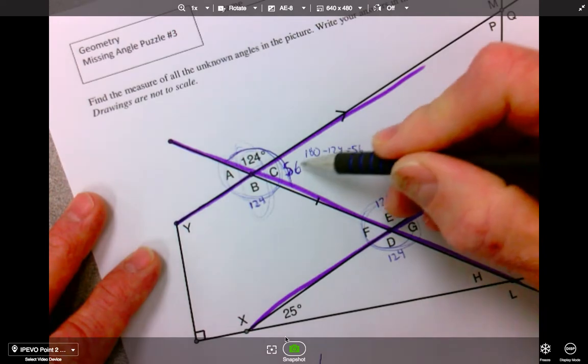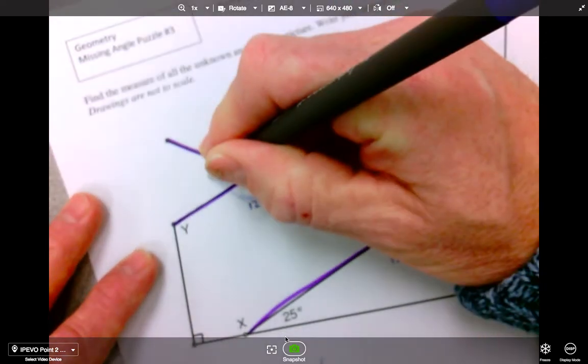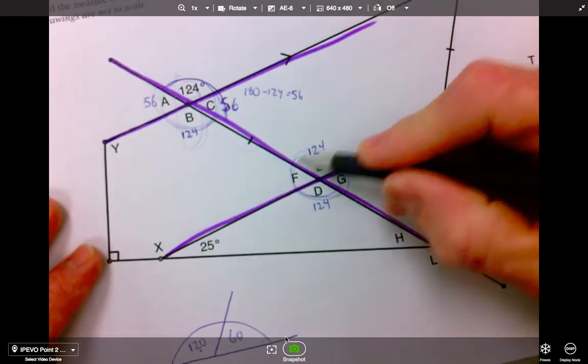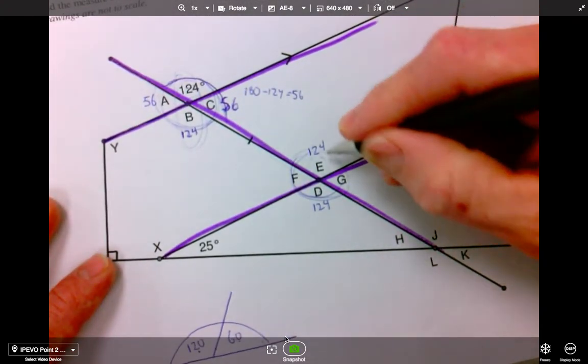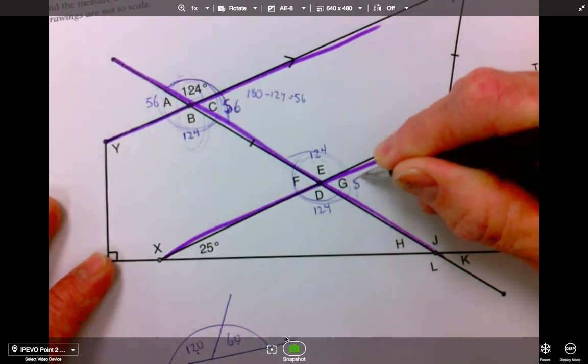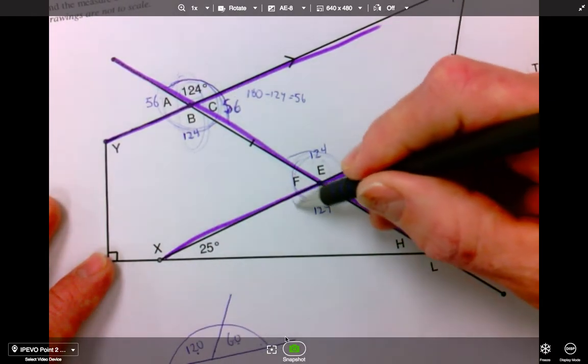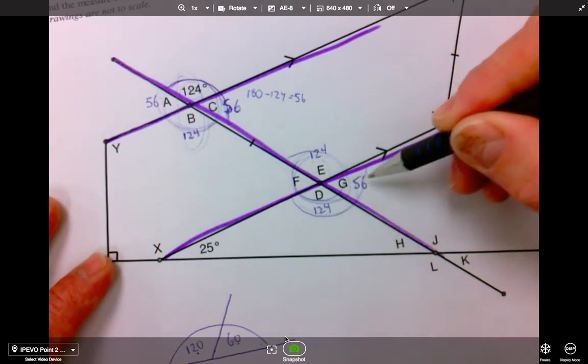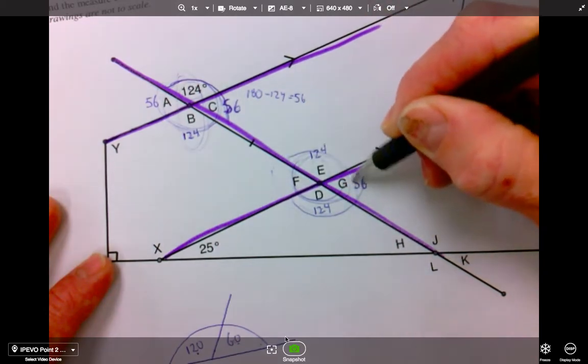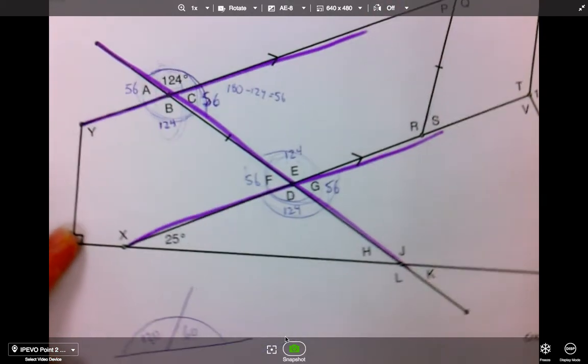And then look, I can even use the opposite rule and make this 56. And then, of course, the mirror of it is down here. If this is 124, this would have to be 56. And then look, another supplementary here, 124, 56. Here, 124. The opposite here, 56. So, so far, so good.